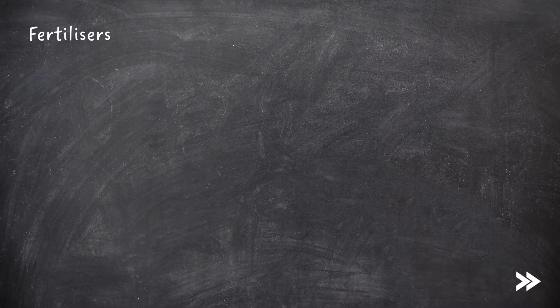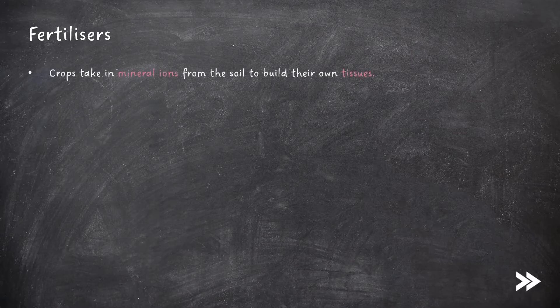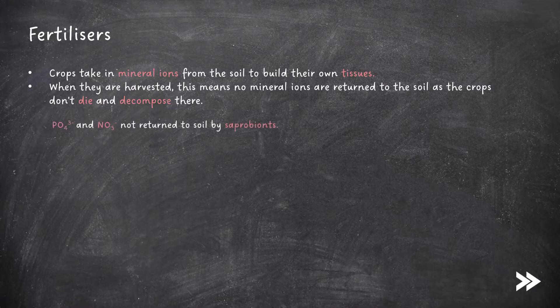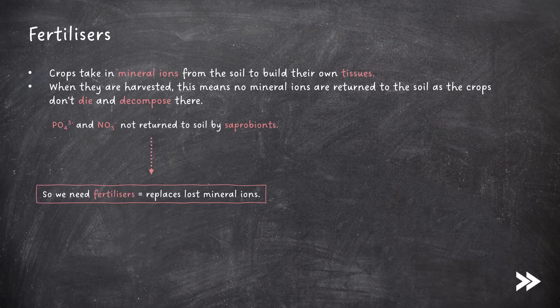Then we have fertilisers. Crops take in mineral ions from the soil and use them to build their own tissues. When they are harvested, this means no mineral ions are returned to the soil, as the crops don't die and decompose there — i.e. no phosphate or nitrate ions are returned to the soil by saprobionts. So we need fertilisers to replace the lost mineral ions.